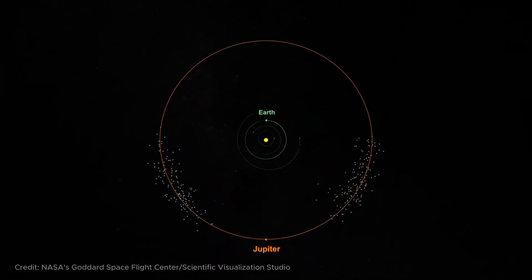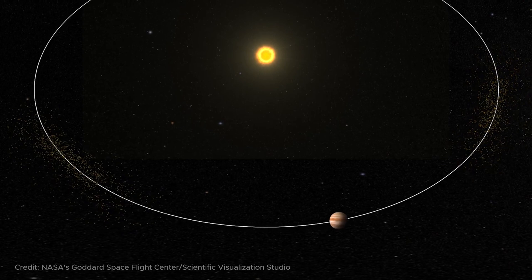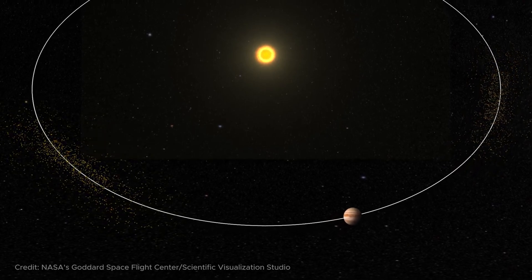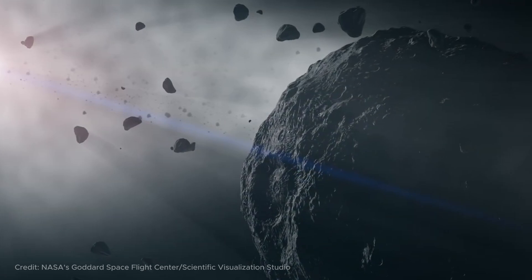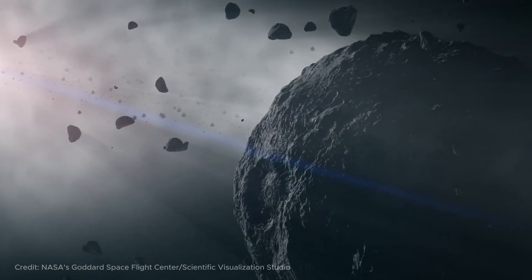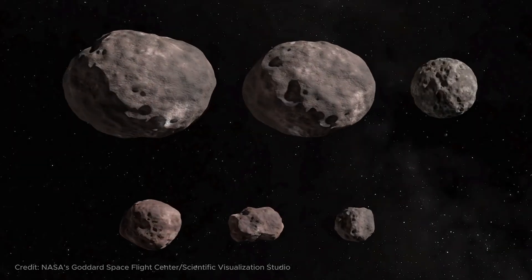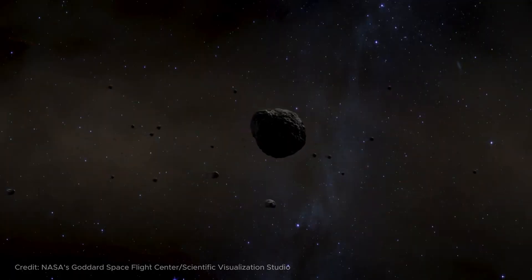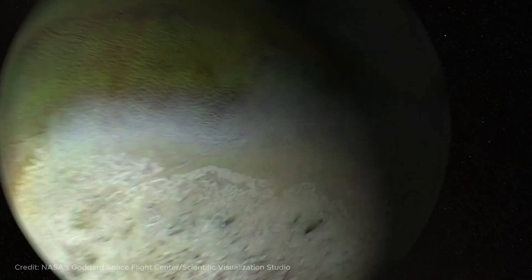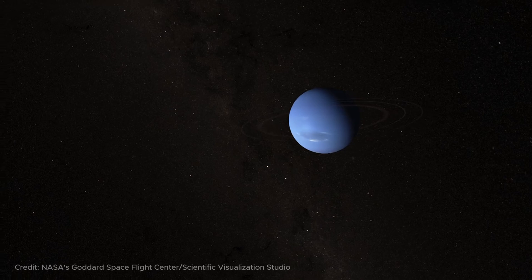Moreover, asteroids in L4 were named after Greek heroes, and those in L5 after Trojan heroes. But then so many asteroids were discovered that the myths did not have enough names, and now they just assign them numbers. But the collection of these asteroids is still called Trojans and Greeks. Similar asteroids exist for almost all planets in the Solar System.